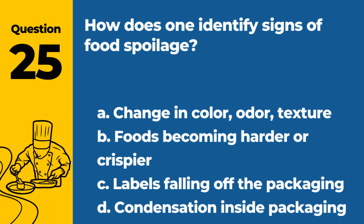Question 25. How does one identify signs of food spoilage? a. Change in color, odor, texture. b. Foods becoming harder or crispier. c. Labels falling off the packaging. d. Condensation inside packaging. Answer: a. Change in color, odor, texture. These are common indicators of food spoilage.